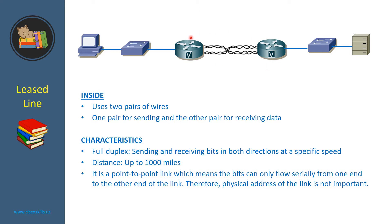This is the inside of a Leased Line. As you can see, it uses two pairs of wires — one pair for sending and the other pair for receiving data. Leased Line sends and receives bits in both directions at a specific speed, so it operates in full duplex mode. It can transmit data at a distance of up to 1000 miles. It is a point-to-point link, which means the bits can only flow serially from one end to the other end of the link. Therefore, the physical address of the link is not important.